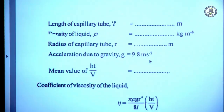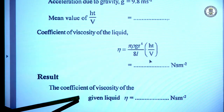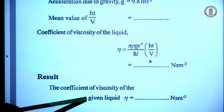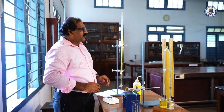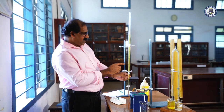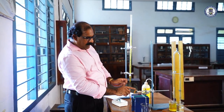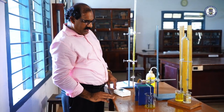From all these known values we determine the coefficient of viscosity and obtain the result. This is the experimental setup: a burette is arranged perfectly vertical, and attached to the burette the capillary tube is arranged perfectly horizontal.